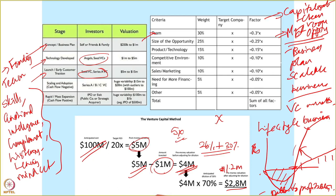Besides the VC method, you also have the scorecard method, which grant institutions and other incubators will look at before you go to the VC. They basically scorecard you on various criteria such as the team, the size of the opportunity, the product and technology you're building, whether it has any technology risk or upside, whether it's a competitive environment for your products and services, the kind of sales and marketing skills you have in place, the financing you require to fulfill your plans, and other such factors. They score you on a scale of 1 to 5 with some weights, and the sum of all these factors with a benchmark of other funded prospects determines whether your proposal will get funding.